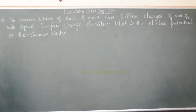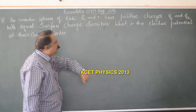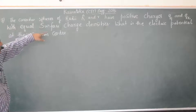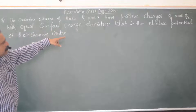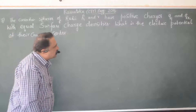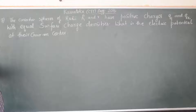Let's now have the next question from Karnataka CET Engineering Entrance Exam of 2013. The problem is: concentric spheres of radii capital R and small r have positive charges Q1 and Q2 with equal surface charge densities. What is the electric potential at their common center?